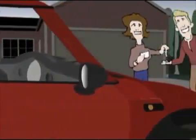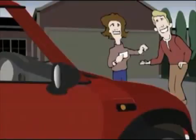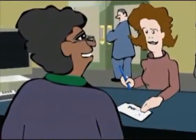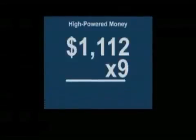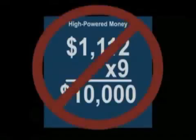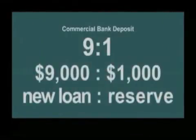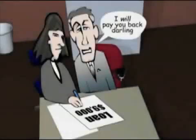The borrower then writes a check on that bank credit to buy the used car. Step 2: the seller then deposits this newly created $10,000 at her bank. Unlike the high-powered government money deposited at the central bank, this newly created credit money cannot be multiplied by the bank. Instead, it's divided by the reserve ratio. At a ratio of 9 to 1, a new loan of $9,000 can be created on the basis of the $10,000 deposit.